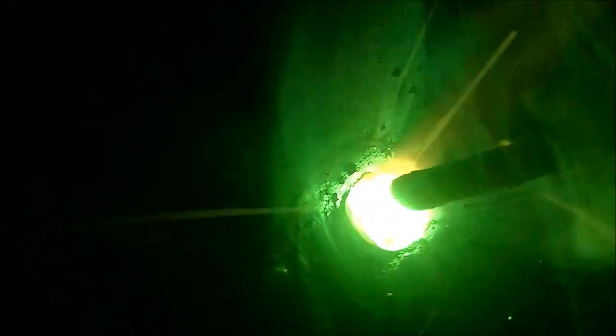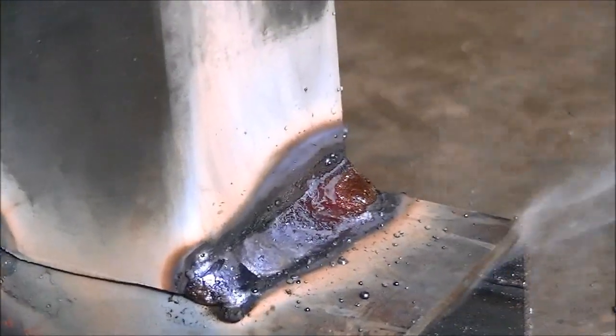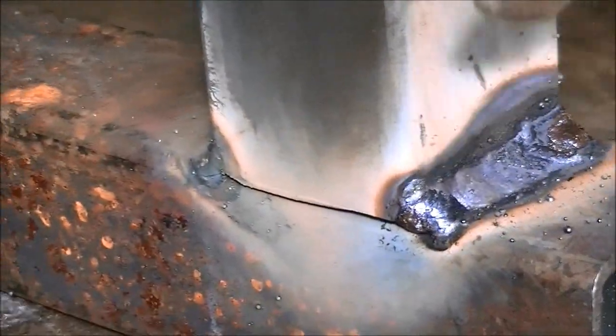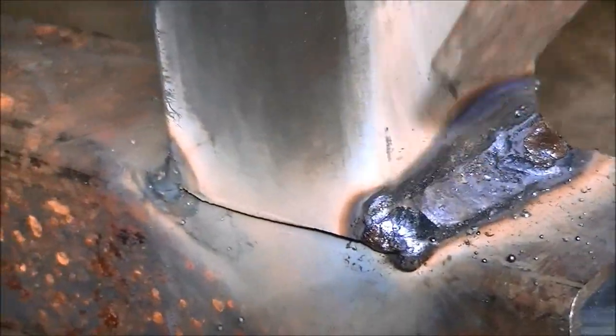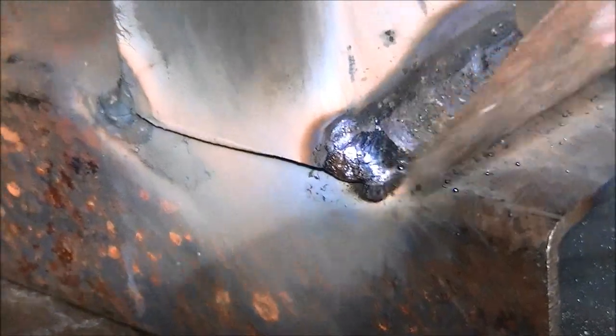This is a 6011 and it produces a little more splatter. What you see is what you get. We're running at about 60 amps for this weld. This flux, we're going to let it cool off a second but it's a little harder to chip off.